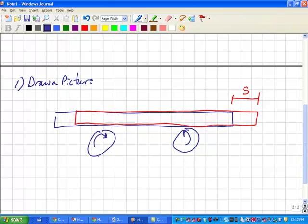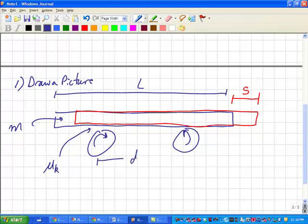In the problem, we were given things like the length of the ruler, we were given the mass of the ruler, we were also given the coefficient of kinetic friction as these rollers spin. And in the problem, we might have also been given this distance here. Okay, we've drawn our picture. The next step is to draw a free body diagram.